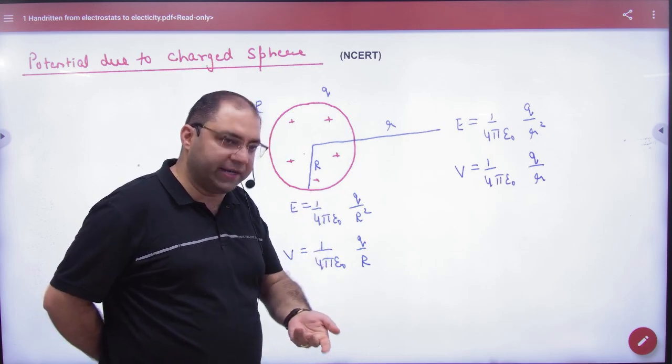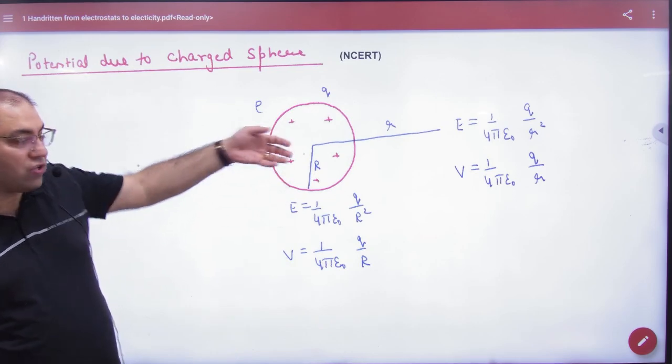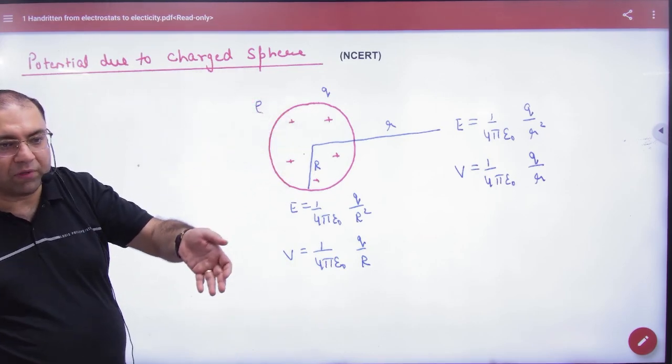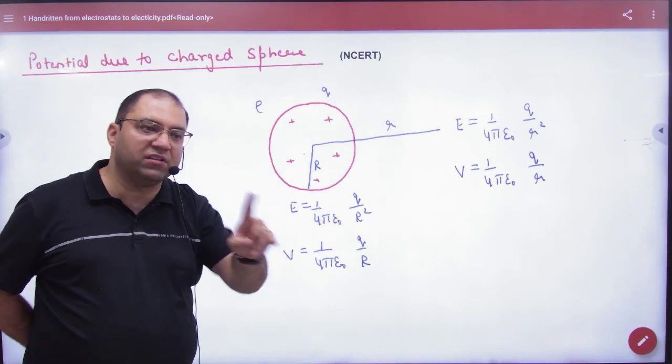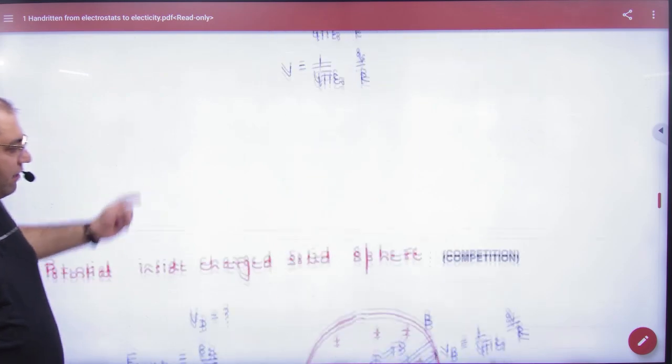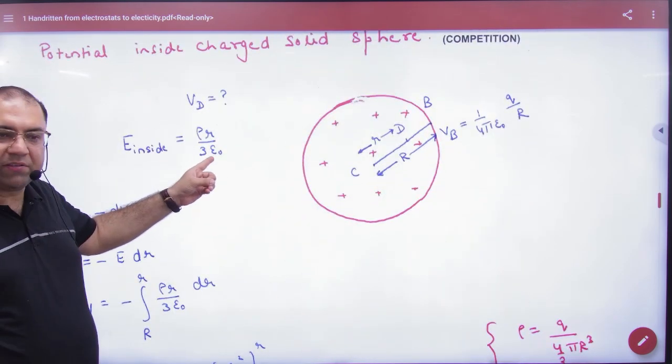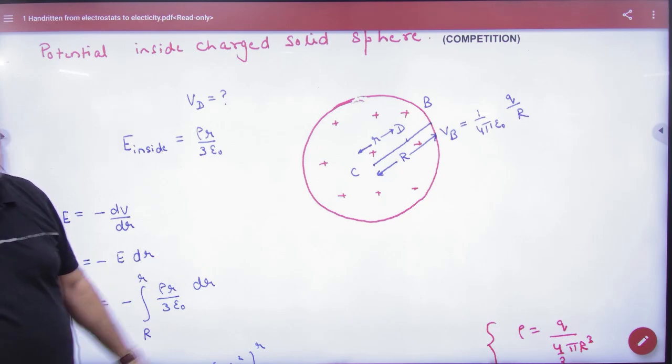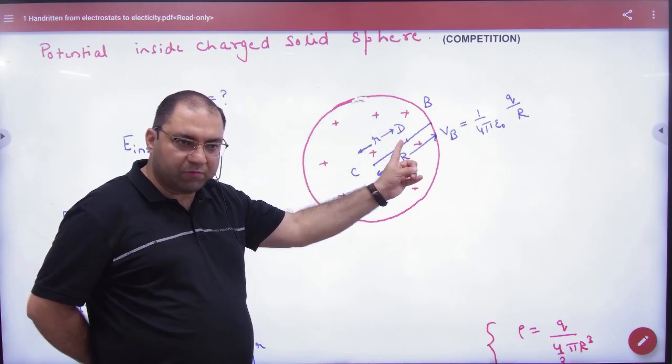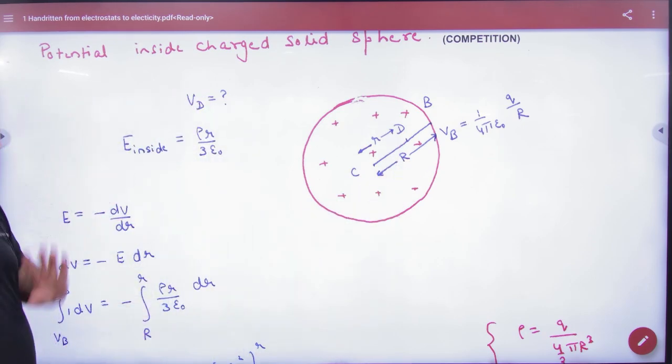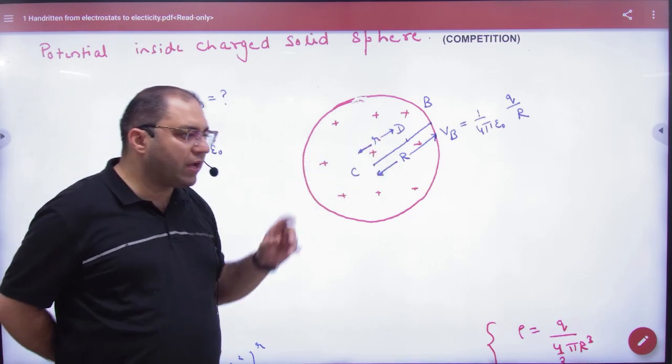Problem is inside. Solid sphere shell inside E is 0, so V is constant. But solid sphere inside E is not 0. We have done what formula is ρr by 3ε₀. So solid sphere inside at point at small r distance, here E's formula. Here at this point, V is...